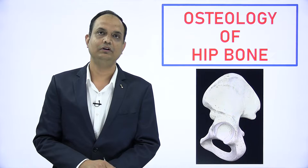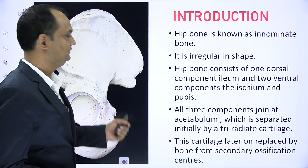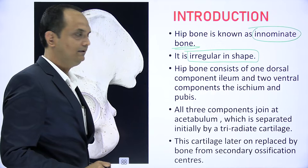Hello students, today we will discuss the osteology of hip bone. In today's lecture, we will talk about the bony features of this hip bone and how to do the side determination of this bone. When you will have the hip bone, the first thing you should know is that hip bone is also known as innominate bone and it is irregular in shape.